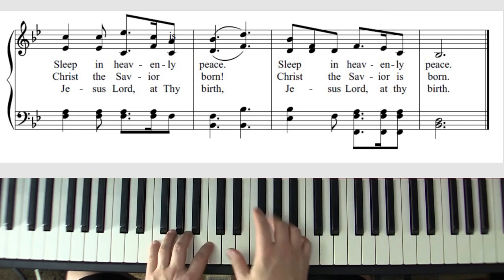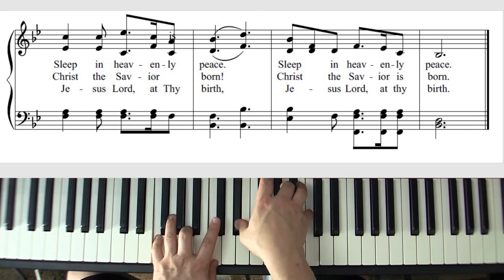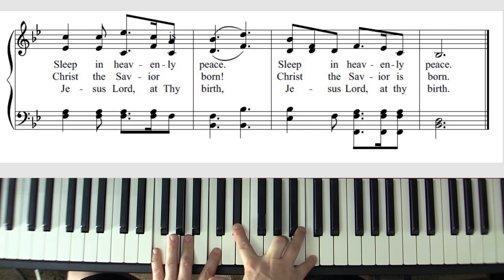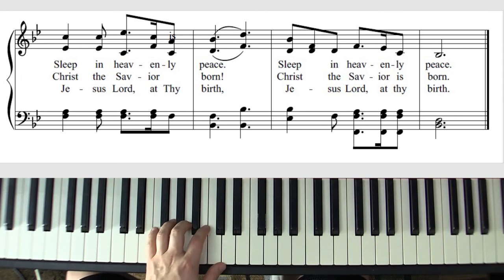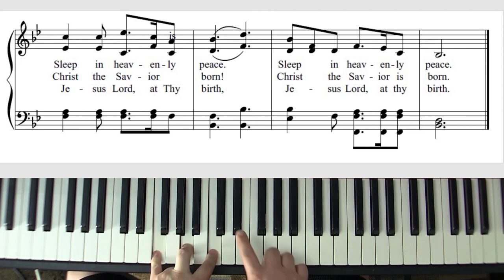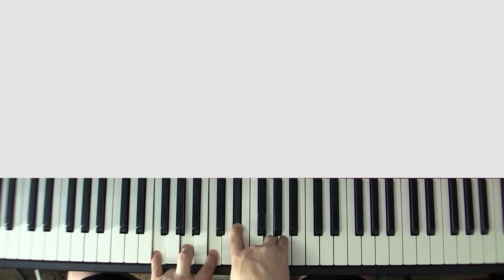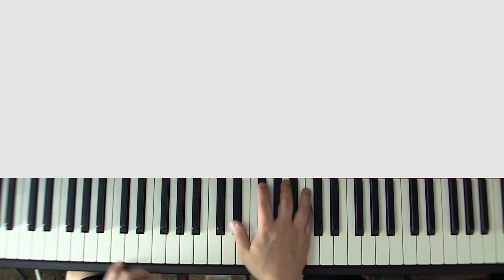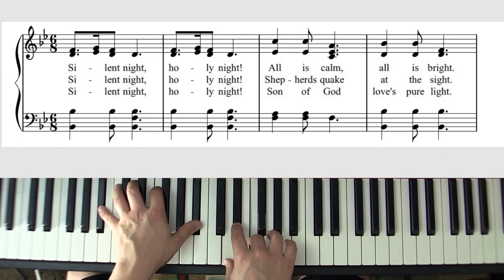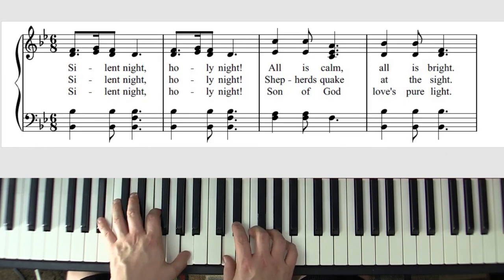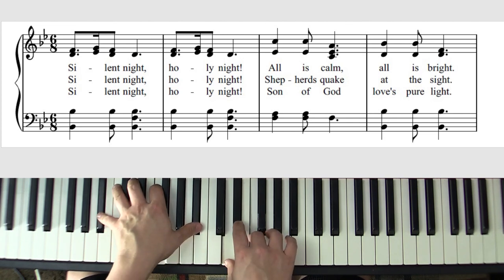How do you spice up an F7? Well, because it already has the seventh, you put in a nine. How do you do a nine? We have F, we have A, we have C, we have E-flat as our seventh, eighth, nine. So add a G to the F7 chord.